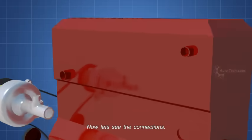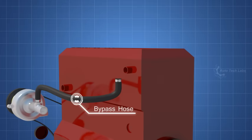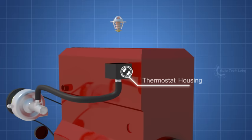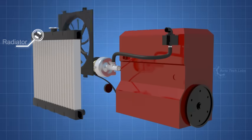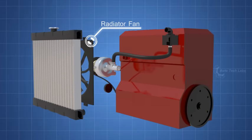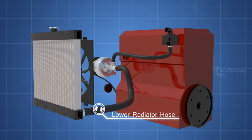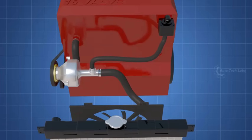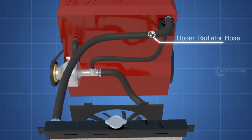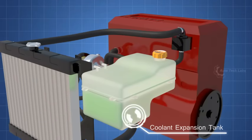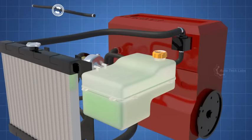Now let's see the connections. The thermostat bypass hose. The thermostat housing. Inside, the thermostat. The radiator and the radiator fan. The lower radiator hose. The water pump outlet hose. The upper radiator hose. The coolant expansion tank. The expansion bleed hose. Coolant overflow hose.